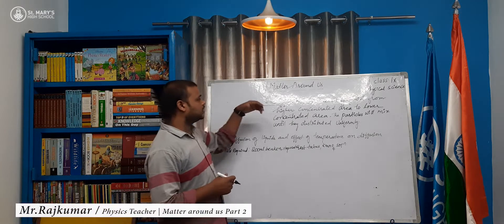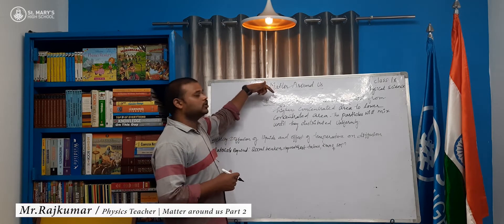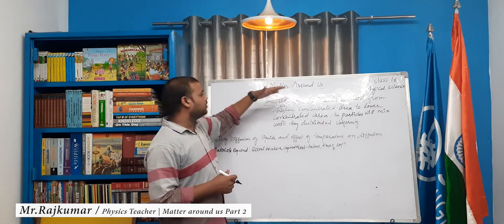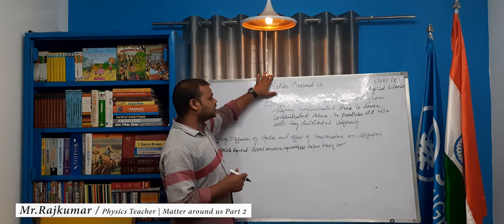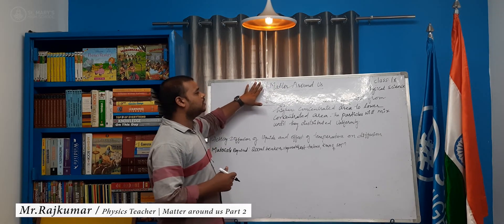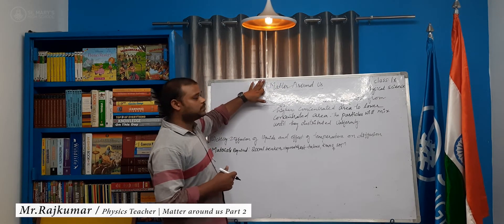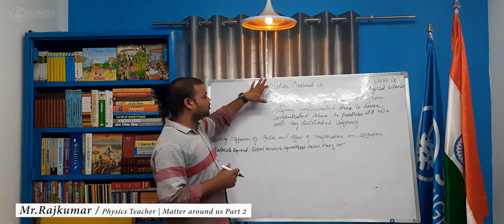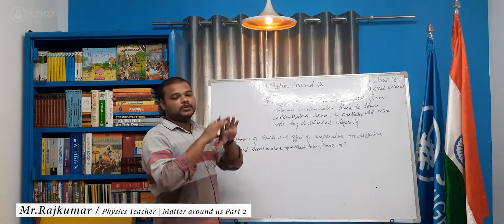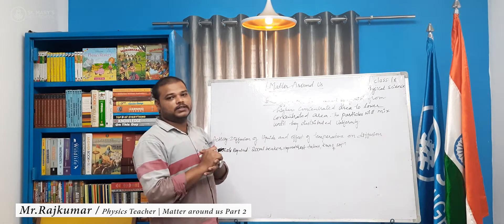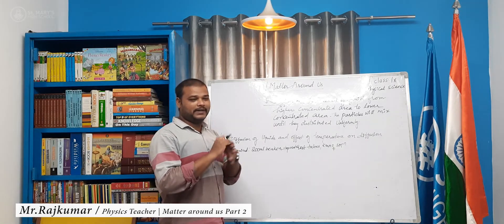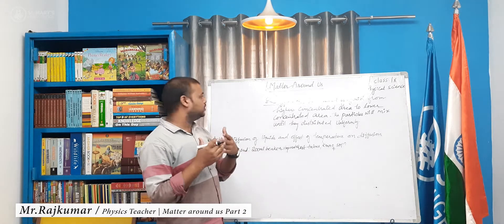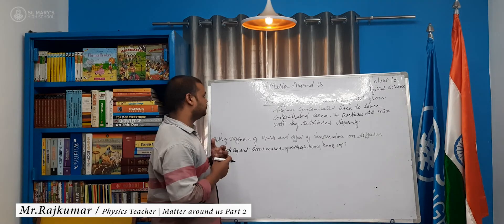Hi students, let us revise what we were learning in the previous class. Our topic was matter around us. What was matter? Matter is the smallest substance which is made of smallest particles. For example, the materials we are seeing around us are the examples of matter.